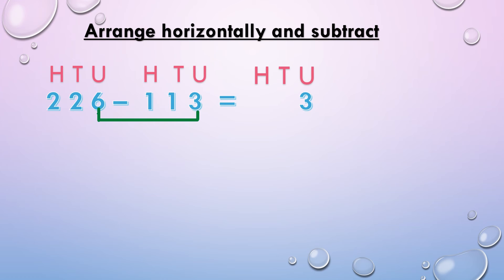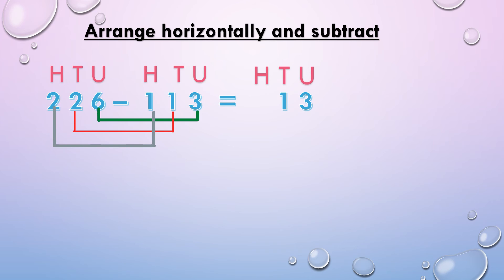Now we subtract the tens place numbers and write in the tens place. Tens place: 2 minus 1, we get 1. Hundreds place: 2 minus 1, we get 1, and we write it in the hundreds place. So 226 minus 113, we get 113.